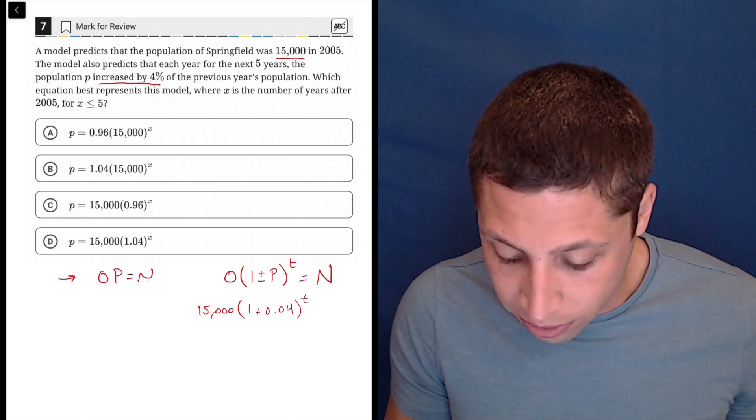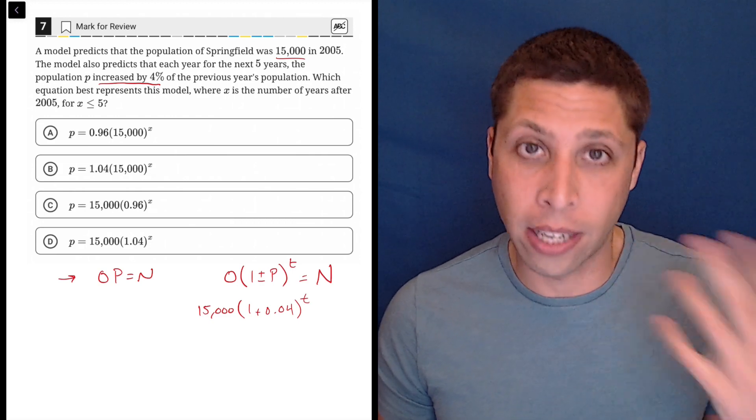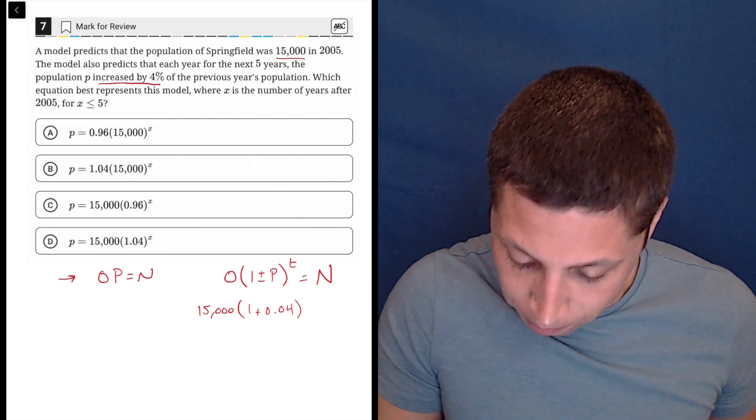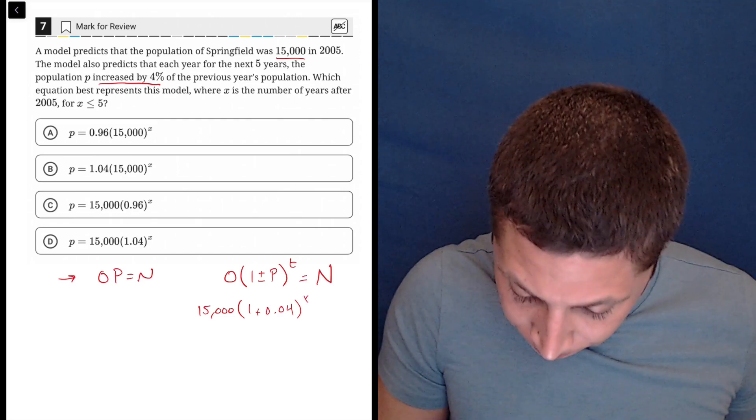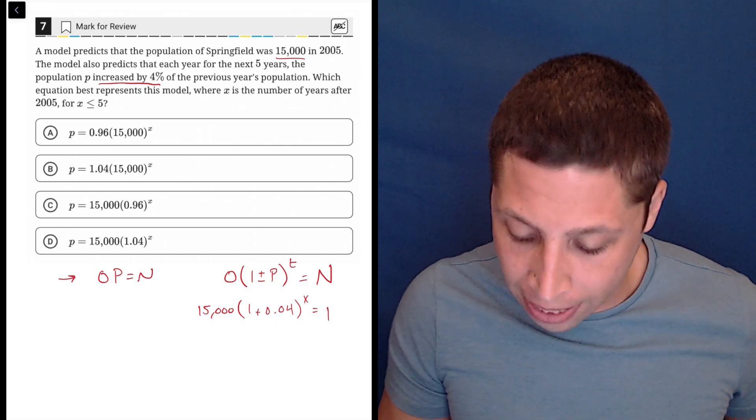And then to the t, we'll keep that as an exponent because they don't give us a specific year. They just tell us it's going to be the same thing. Let's actually change it to an x just to match with the question. And then the new amount in this case is the population. So that's just the letter p.